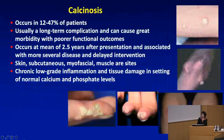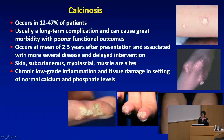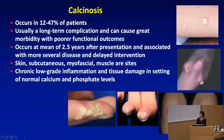Calcinosis is a long-term complication, particularly with disease that was not aggressively treated early in a timely manner. It can cause great morbidity and poor functional outcomes, occurring at a mean of two and a half years after presentation. It presents in a variety of manifestations — sometimes so extensive that it totally encases muscles or even looks like an exoskeleton on radiographic evaluation.